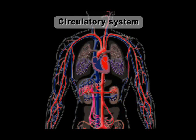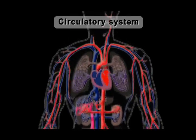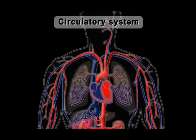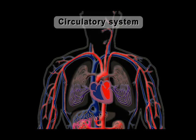The oxygenated blood reaches different parts of the body through blood vessels called arteries. Arteries get branched into finer blood capillaries when they reach different organs. At places, they become only one cell thick. At such places, they transfer oxygen to the organ cells. In turn, the blood slowly becomes deoxygenated.